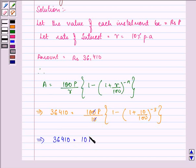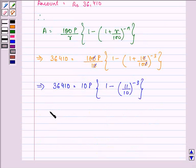This simplifies to 10P times [1 minus 11 by 10 raised to the power minus 3].